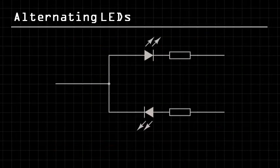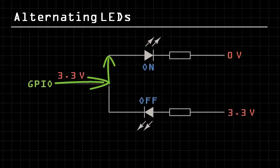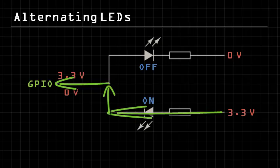This gives us a way to switch back and forth with two LEDs using only one GPIO pin. If the GPIO pin is set high, current will flow only through the top branch, and when the pin is set low, current will only flow through the bottom branch.